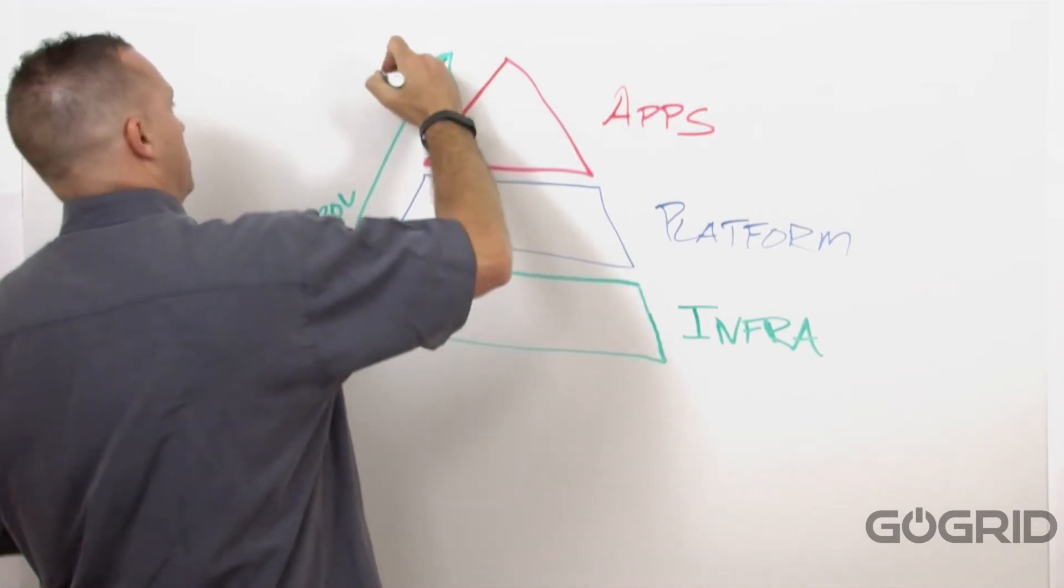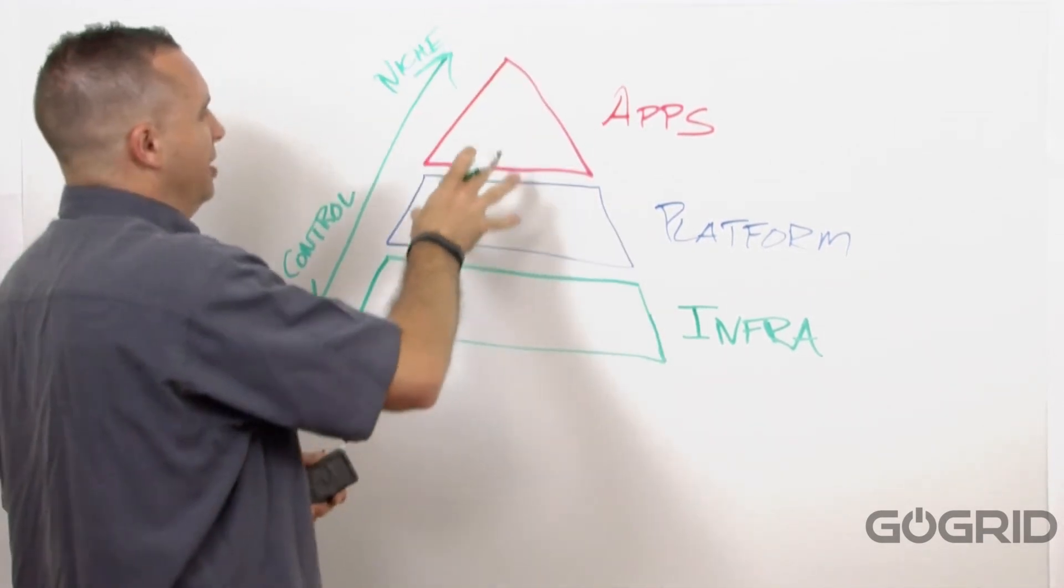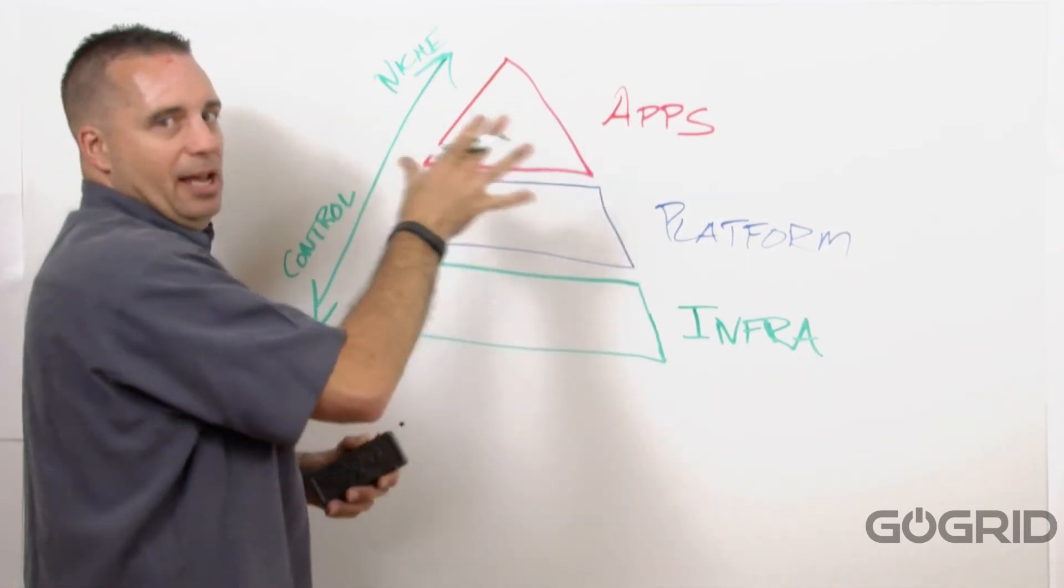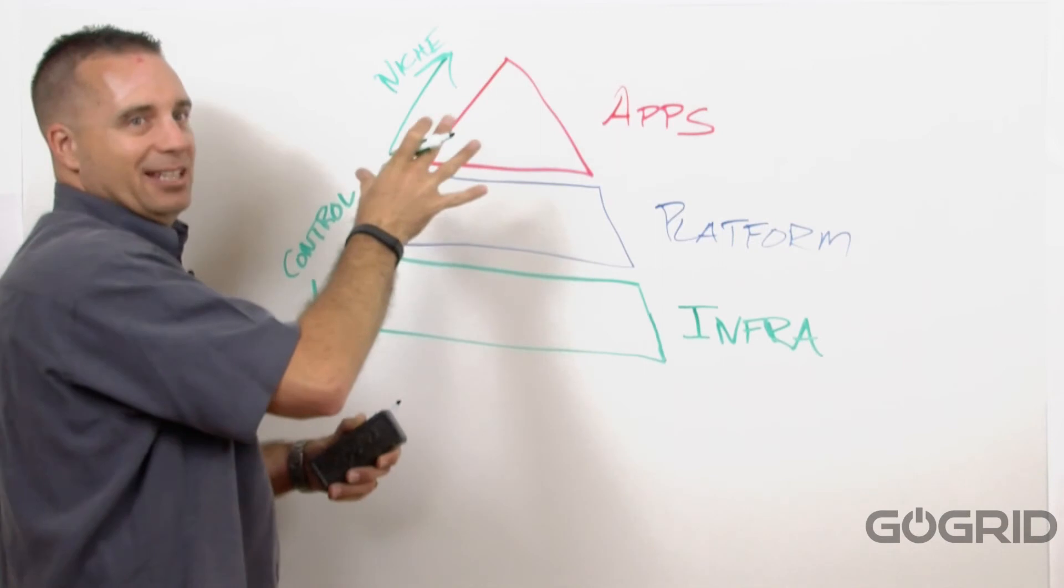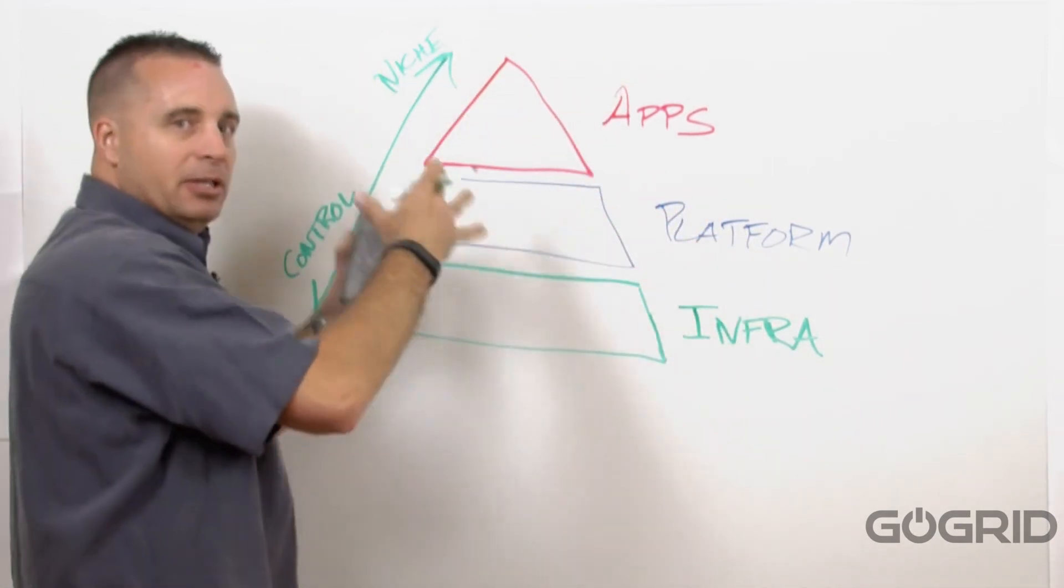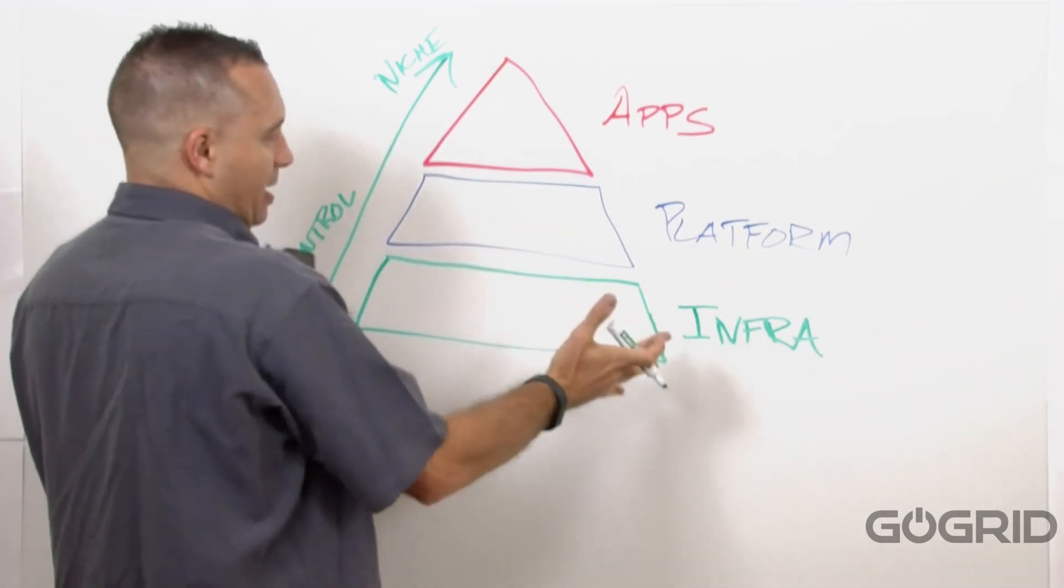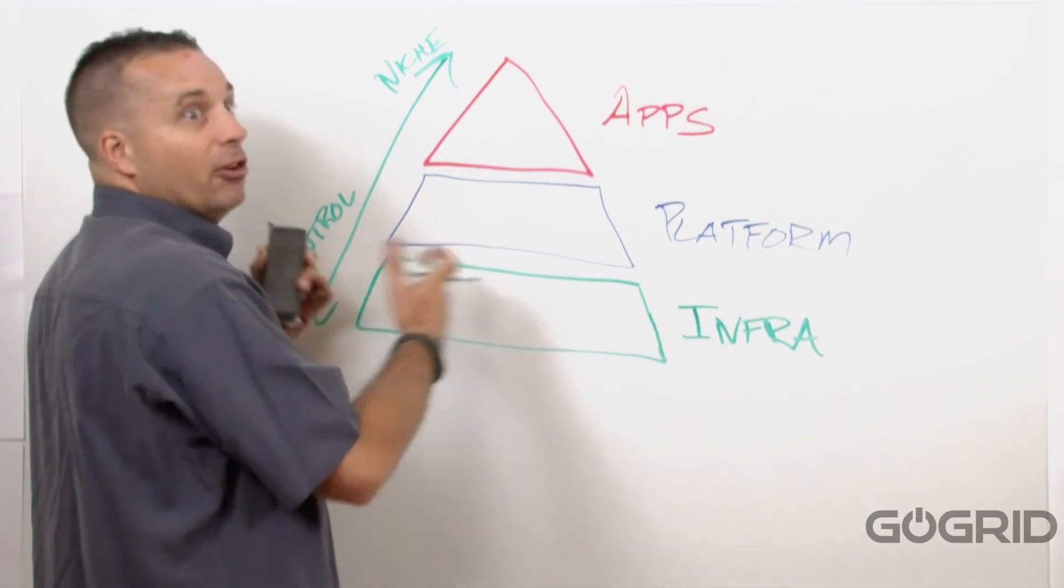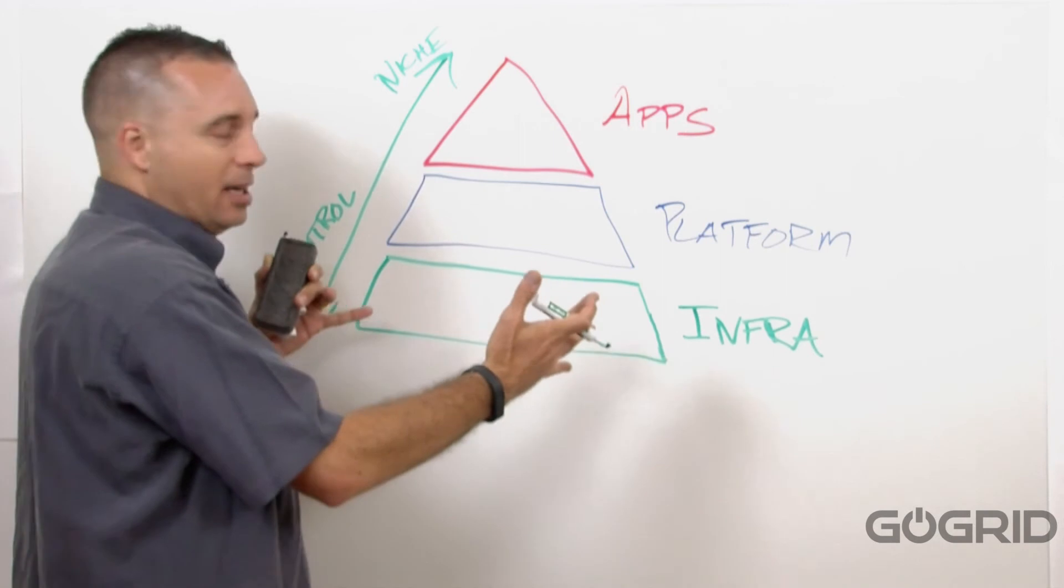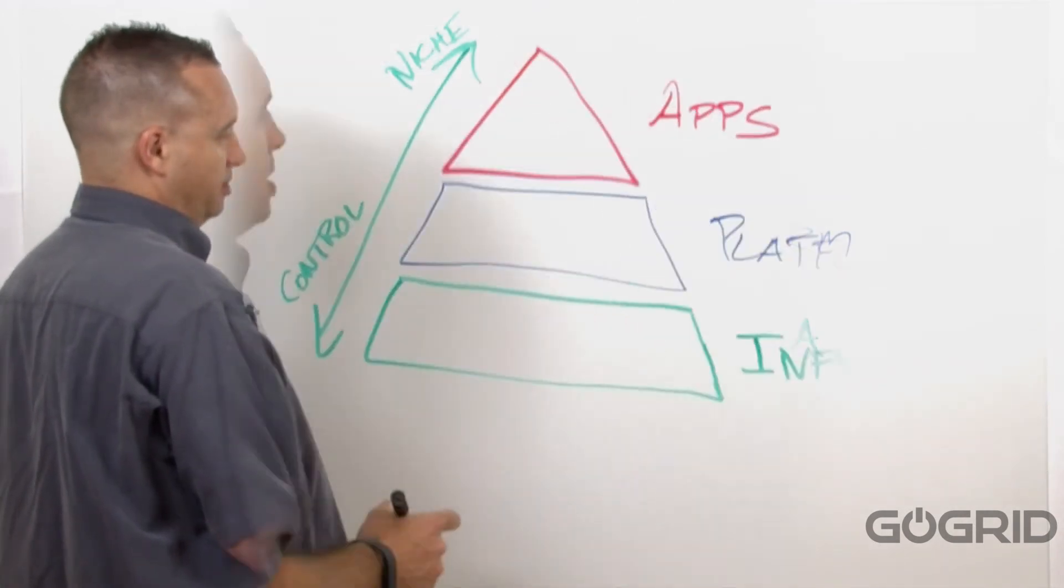And this is more sort of niche-oriented. You don't have as much control. You have access, basically, to certain elements of the software, but you can't change a variety of different things. The platform layer, you're given more exposure to more frameworks. And then, at the infrastructure layer, you're given full access to a lot of different components, compute, storage, networking, that sort of thing.